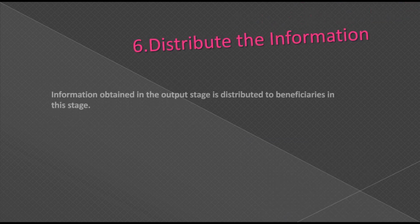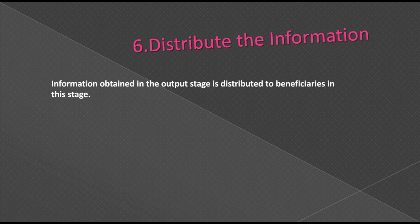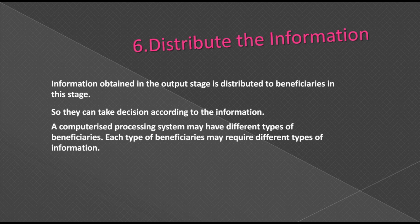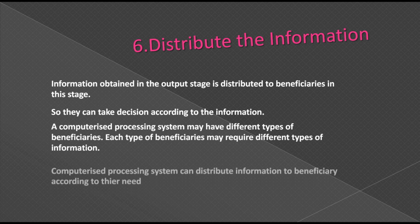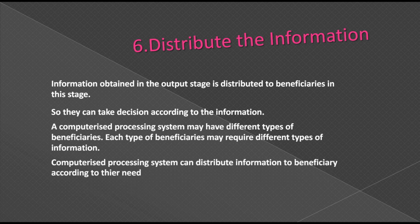The sixth stage is distribute the information. Information obtained in the output stage is distributed to beneficiaries in this stage, so they can take decisions according to this information. A computerized processing system may have different types of beneficiaries, each requiring different types of information, and the system can distribute information to each beneficiary according to their need.